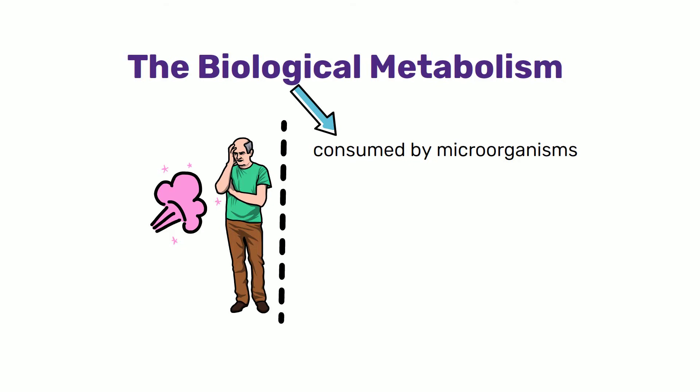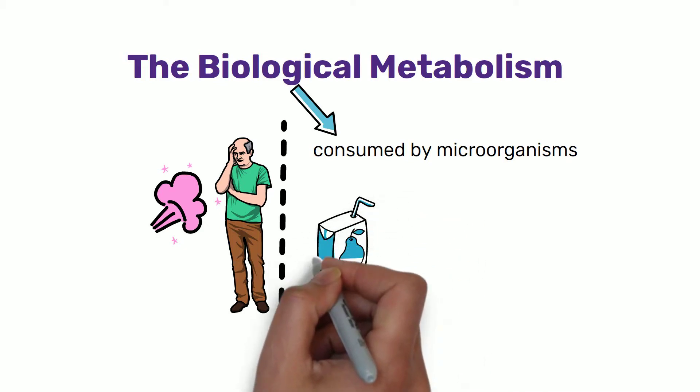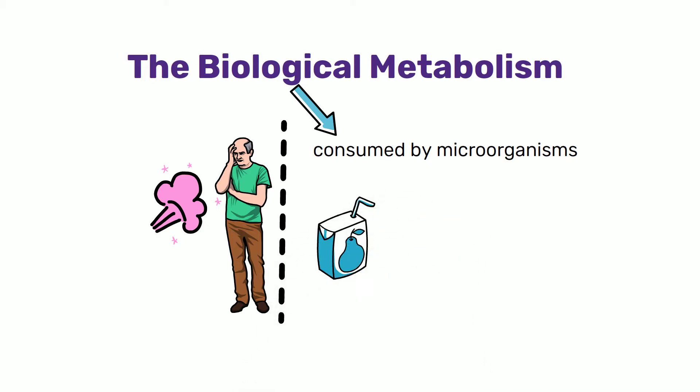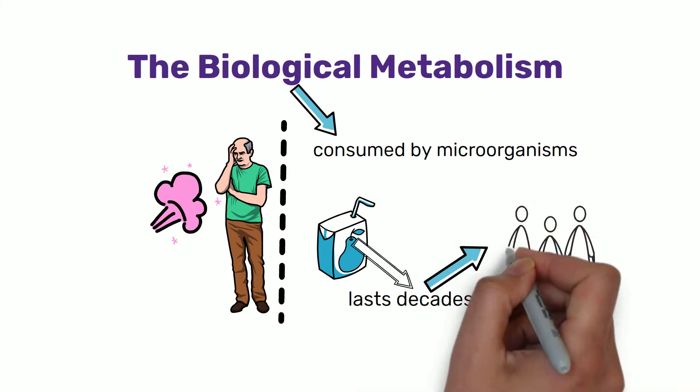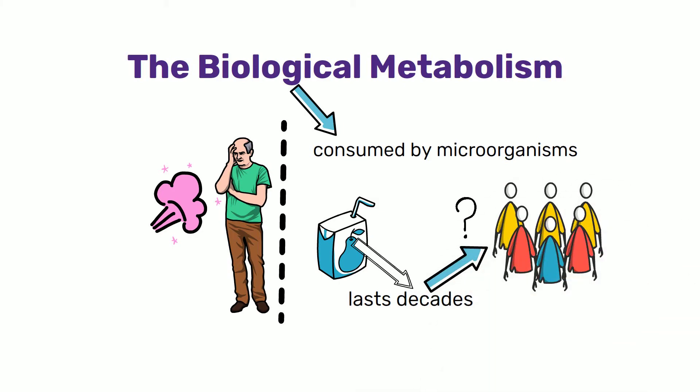Most packaging, which makes up to 50% of the volume of the municipal solid waste stream, can be designed as biological nutrients. For example, if a juice doesn't even last a week, why do we need a juice container that lasts decades? Why should individuals and communities be burdened with downcycling or landfilling such materials?